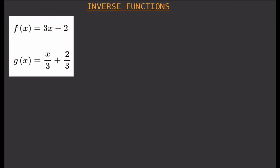Here's how. Let's start with f of x and find its inverse. The first thing you do is rewrite the equation: instead of writing f of x, you write y, because f of x equals y. So you write y equals 3x minus 2.